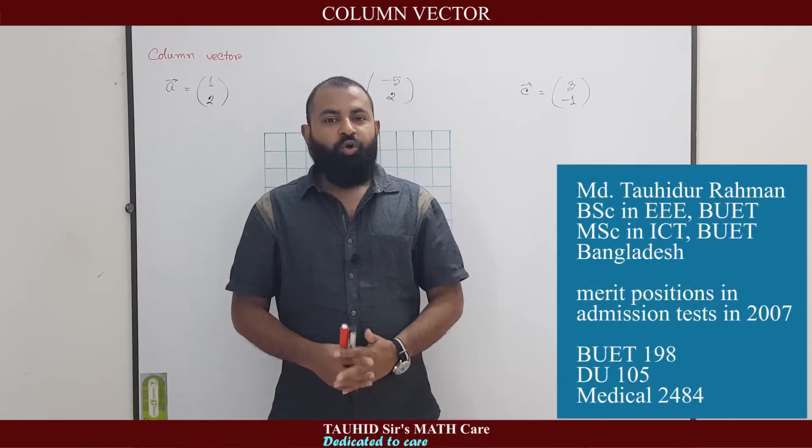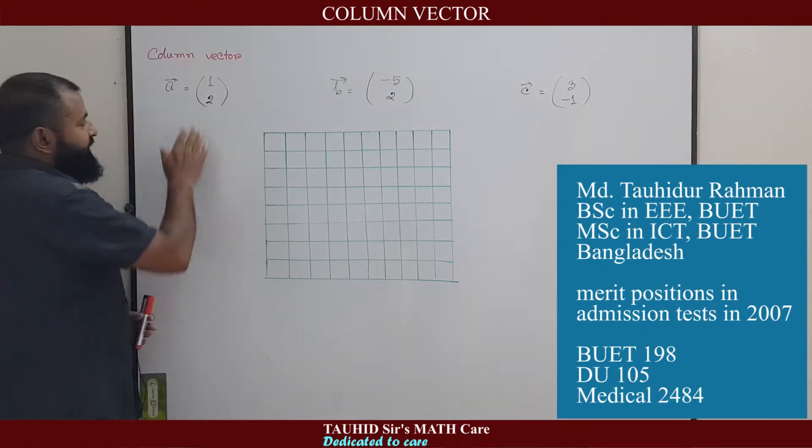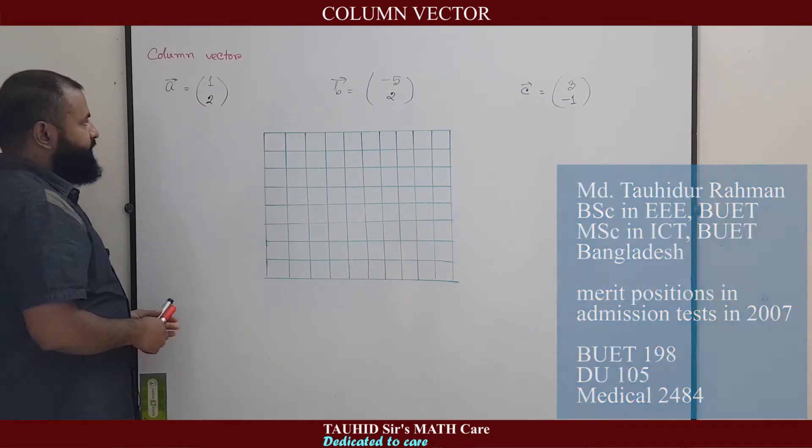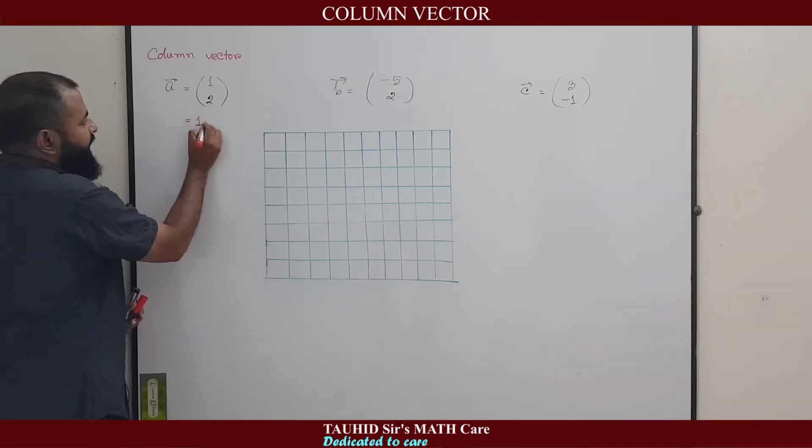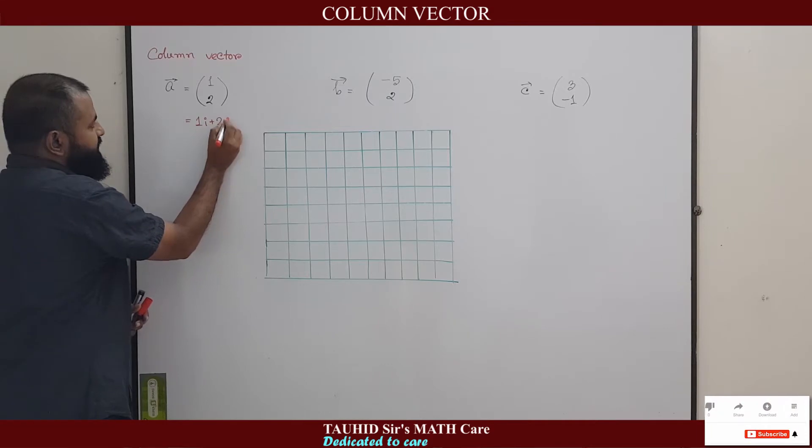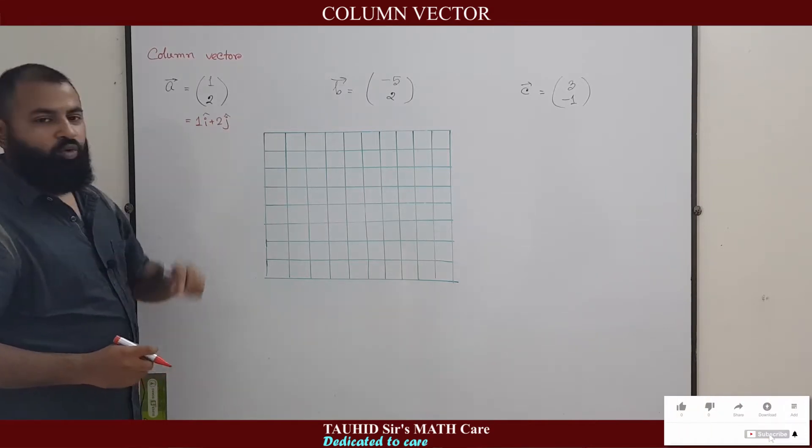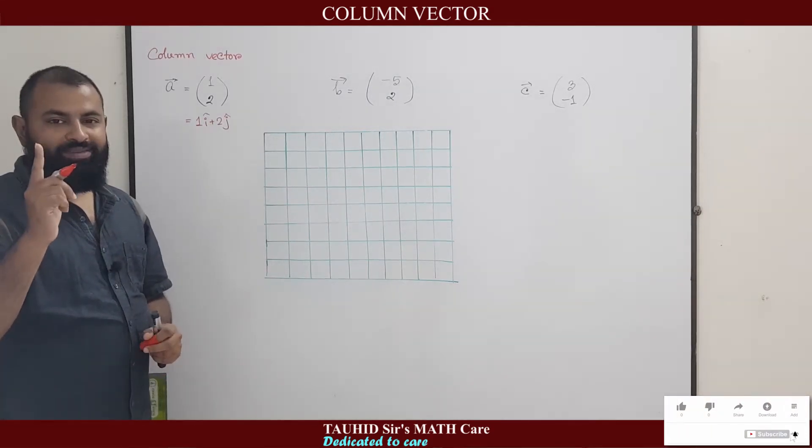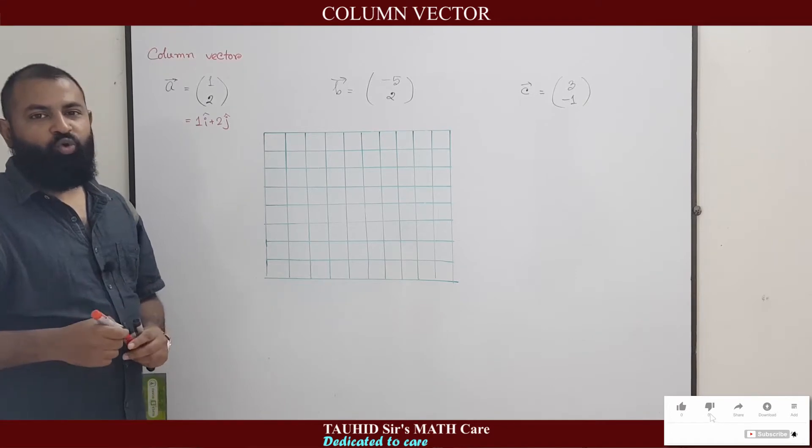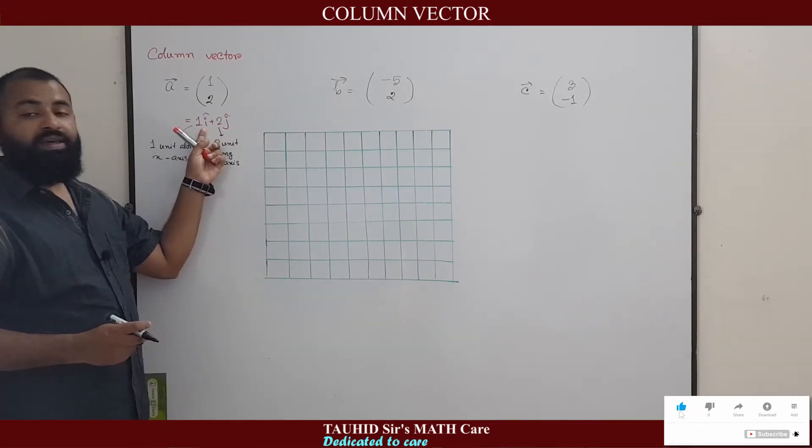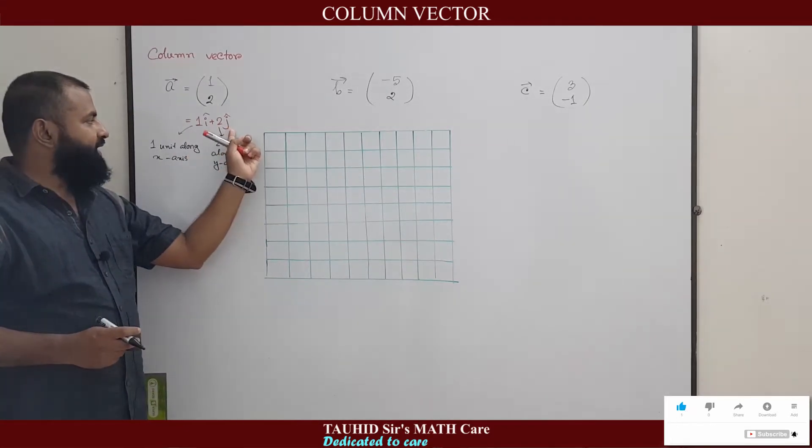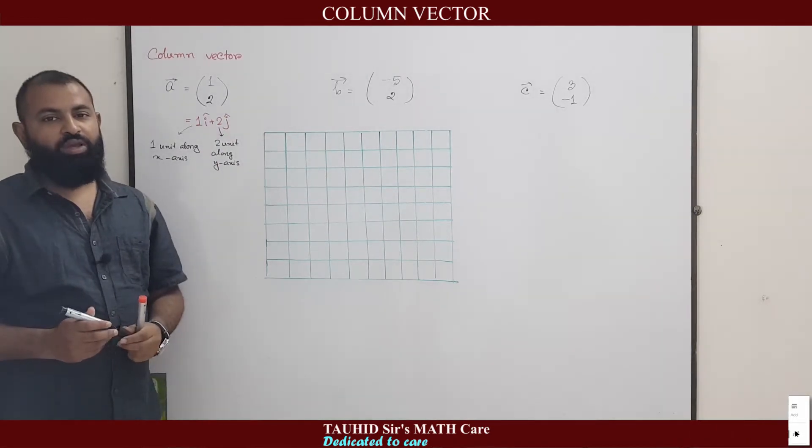Now we will learn about column vector. Column vector is written in this shape, in a shape of a column. This can be written as 1i plus 2j. That means it will move one unit along x-axis and two units along y-axis. This i is the unit vector along x-axis and this j is the unit vector along y-axis.